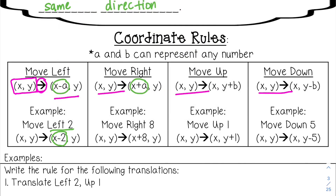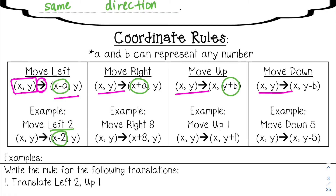For up and down, we are going to be adding and subtracting from the y value, which makes sense since the y-axis is vertical. If I'm going up, I'm going to be adding to the y coordinates — so if I want to go up one, I would write y plus one. To go down, I'm subtracting from the y coordinates — so if I want to move down five, I would write y minus five.